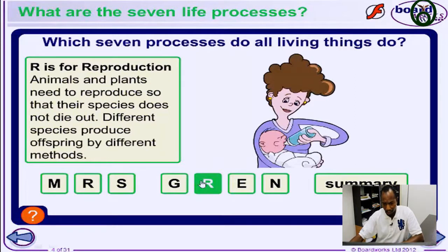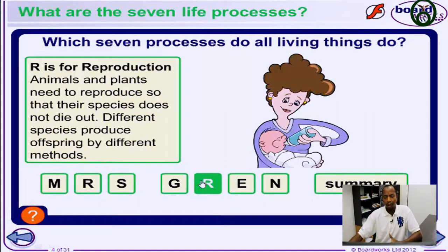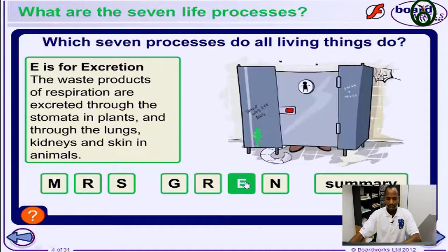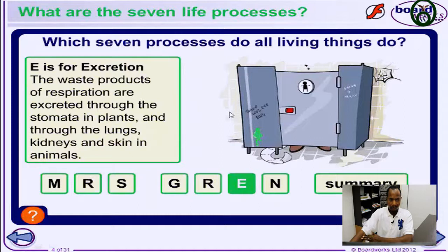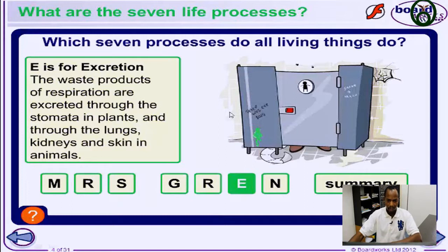Reproduction is also a characteristic of all living things — all living things produce their young ones, either sexually or asexually. Then the sixth one is excretion — all living things get rid of their waste products from their body, either as sweat from the skin, urine from the kidney, and so on. Plants and animals alike get rid of waste products.